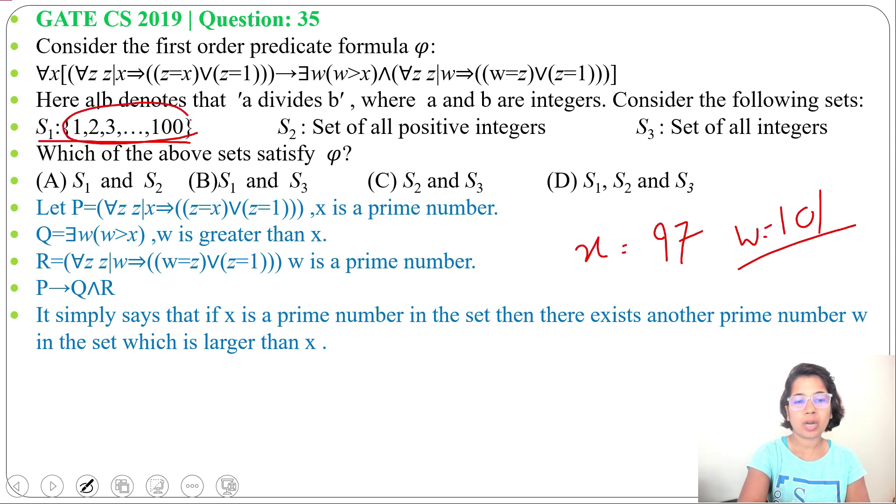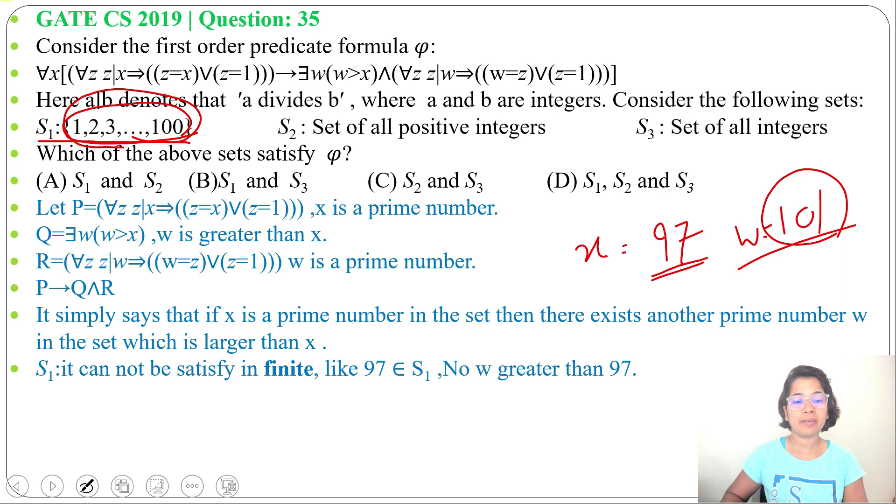This set contains 1 to 100. This 101 is greater than 100. So for x equals 97, there is no w which is a prime number and which is in this set. So S1 doesn't satisfy φ.